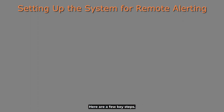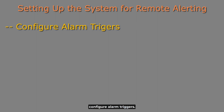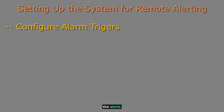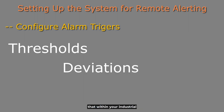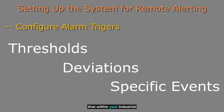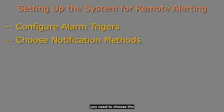The first step is setting up your system for remote alerting. The first thing you need to do is configure alarm triggers — that basically means defining the conditions that will trigger the alerts. That could be a threshold deviation or any specific event within your industrial process.